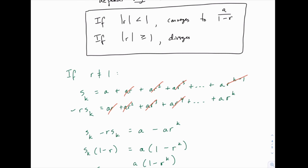If the proof didn't make a lot of sense, that's okay — that's not something you need to be able to repeat. The conclusion is what you need to be able to recognize. Look at a geometric series, find whether it converges or diverges, and if it converges, know what it converges to.